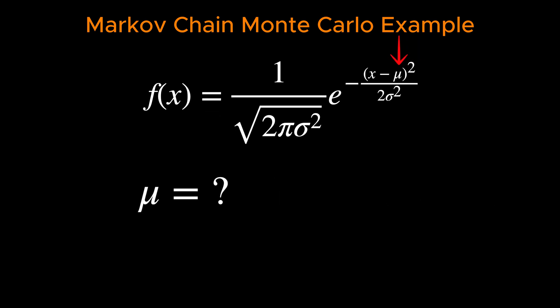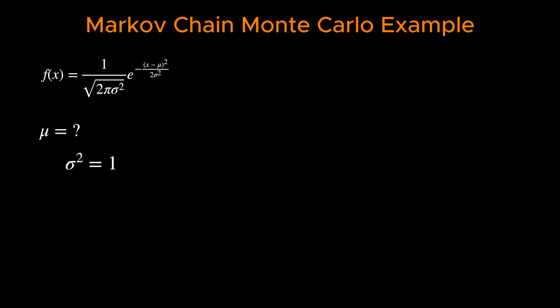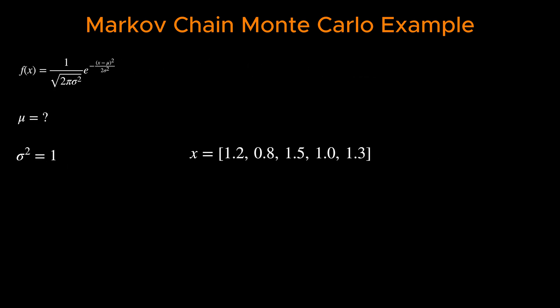Let's now see how we can use Markov chain Monte Carlo to estimate the mean of a one-dimensional Gaussian distribution using data, assuming that the variance, σ², is given. Our goal is to estimate the mean of this distribution based on the following observed data points.